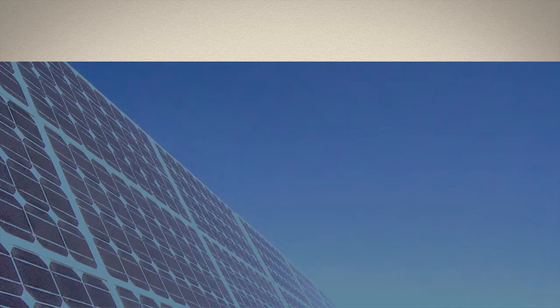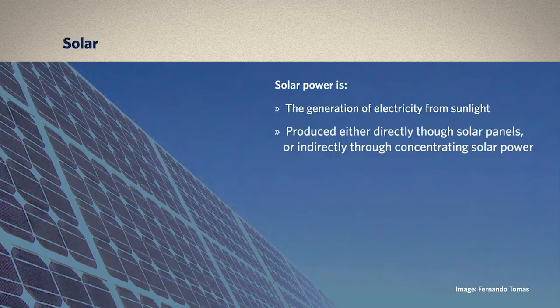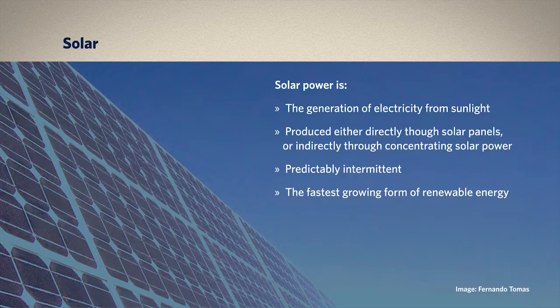Solar power is very simply the generation of electricity from sunlight. Photovoltaic panels can be used to collect and transform solar radiation into power, or the sun's energy can be focused to boil water, which is then used to provide power. Solar power is intermittent, but predictably so, making it a simpler task to anticipate when it will be available compared to wind, for example. Some solar experts argue that even the tiny percentage of sunlight that touches the Earth is plenty to meet the energy and power needs of the entire human population many times over. The trick, however, is in capturing it efficiently and storing it effectively.